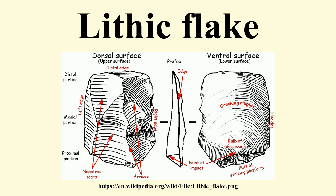Flake terminations may be feathered, hinged, stepped, or plunging. Feathered terminations are often very sharp, as the flake gradually reduces to a very fine thickness before the force exits the core and removes the flake. Hinged terminations are the result of the force rolling away from the core, resulting in a rounded distal end. Step terminations result when a flake prematurely breaks or snaps during removal, leaving a distal end that is often squared off.